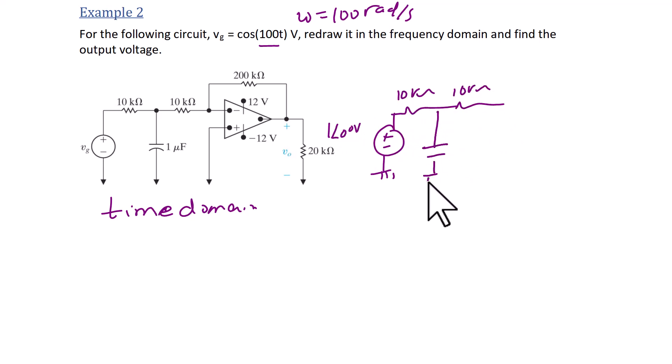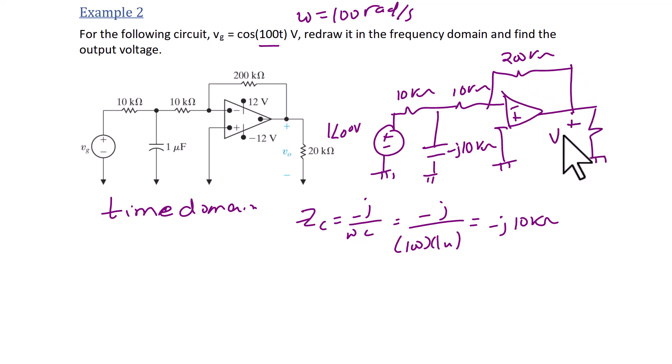We have a 10k ohm resistor, another 10k ohm resistor, and the impedance of the capacitor is negative j over omega c, or negative j over 100 times 1 micro, which is negative j 10k ohms. Then we have our positive terminal tied to ground, and our feedback resistor is 200k ohms. And then we have an output resistor that's 20k ohms, where V0 is.